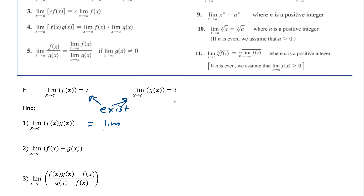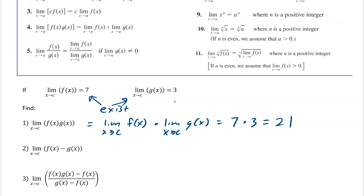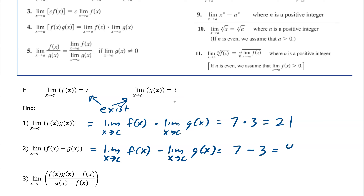That means we can take the limit of f(x) times the limit as x approaches c of g(x). It allows us to multiply because they both exist. So this would be 7 times 3, which is 21. And since they both exist, we could also do a subtraction: f(x) is 7, g(x) is 3, subtract them and we get 4.